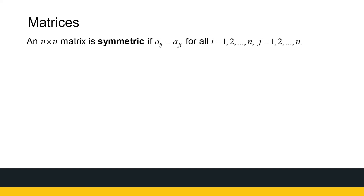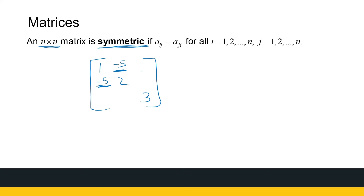A symmetric matrix is one that is symmetrical — it first has to be a square matrix. In a 3-by-3 example, it doesn't matter what's on the diagonal, but a_{2,1} and a_{1,2} must be the same. So if a_{1,2} is minus 5, then a_{2,1} must also be minus 5. If a_{1,3} is 4, then a_{3,1} must be 4. And a_{2,3} and a_{3,2} must be the same. A symmetric matrix is symmetrical around the main diagonal — a mirror image across it.